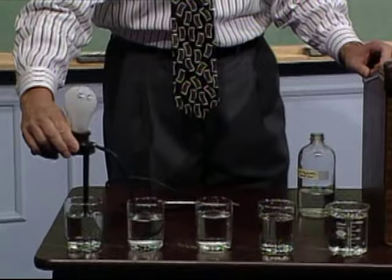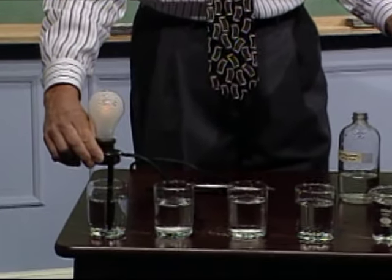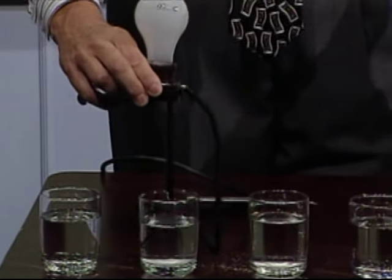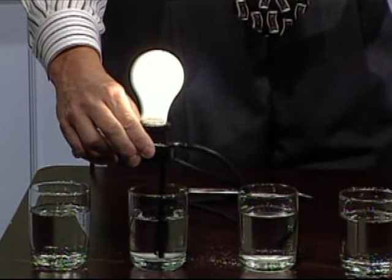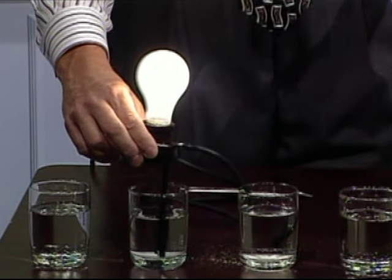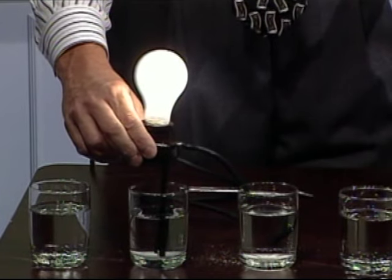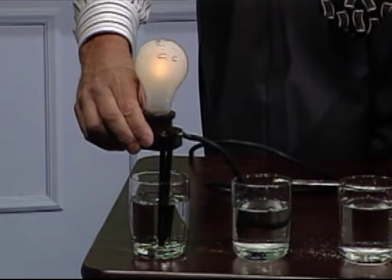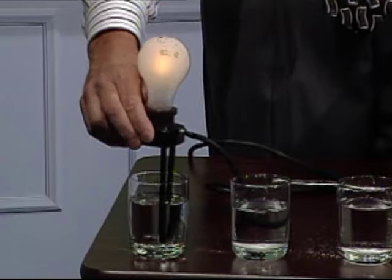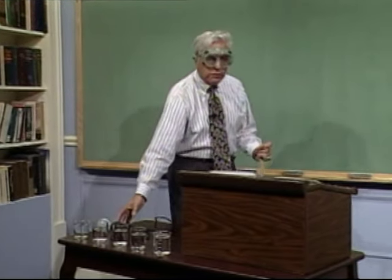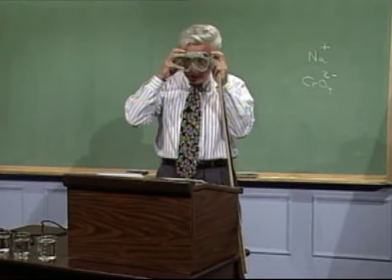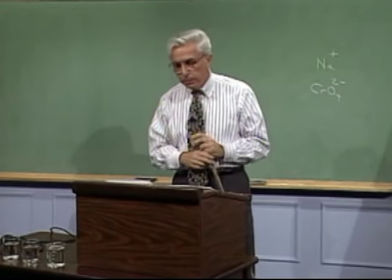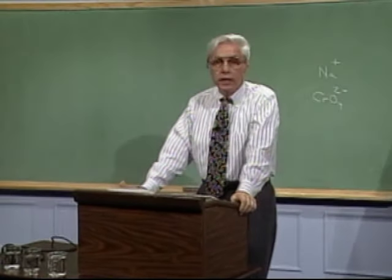With acetic acid, you can see only a faint glow. With sodium chloride, there's a clear and significant difference in conductivity. That test shows us there is a significant difference between the salt solution and the acetic acid solution. Sodium chloride is a strong electrolyte — it ionizes 100% in aqueous solution. Acetic acid, on the other hand, is a weak electrolyte; it only ionizes about half a percent in aqueous solution.